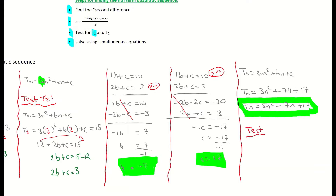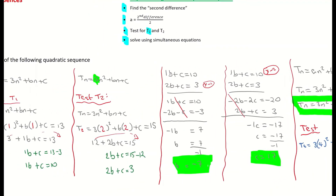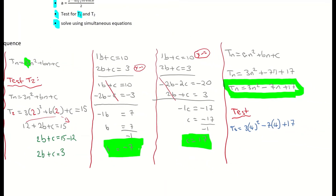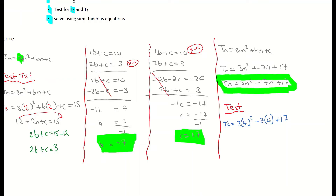Now I always verify it just to make sure I didn't make a mistake. You don't need to do this, but it's good practice. I'm going to test for t4, substituting 4 for n: 3 times 4 squared minus 7 times 4 plus 17. The fourth term in my sequence is 37. Working it out: 4 squared is 16, 3 times 16 is 48, minus 28 plus 17 gives t4 equals 37. I've verified that 37 equals 37, so the formula is correct. Good practice to always check one of your values in your formula.